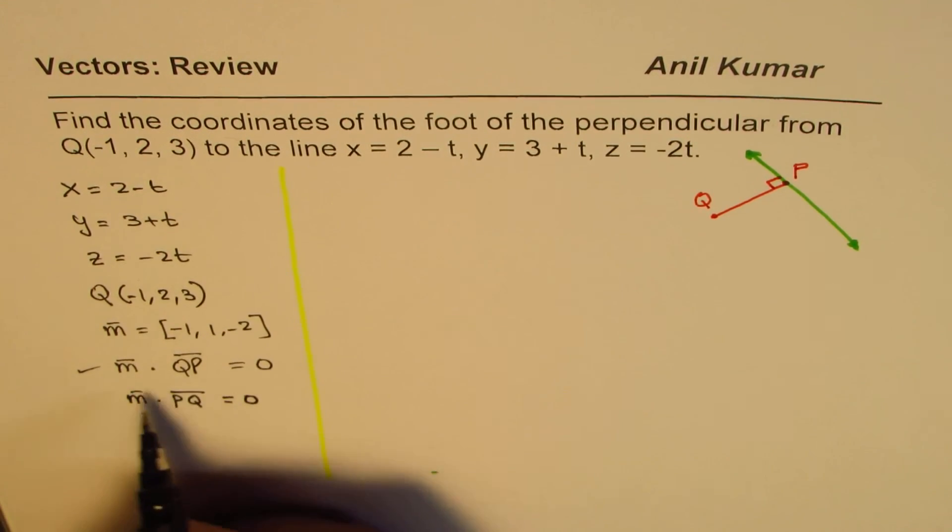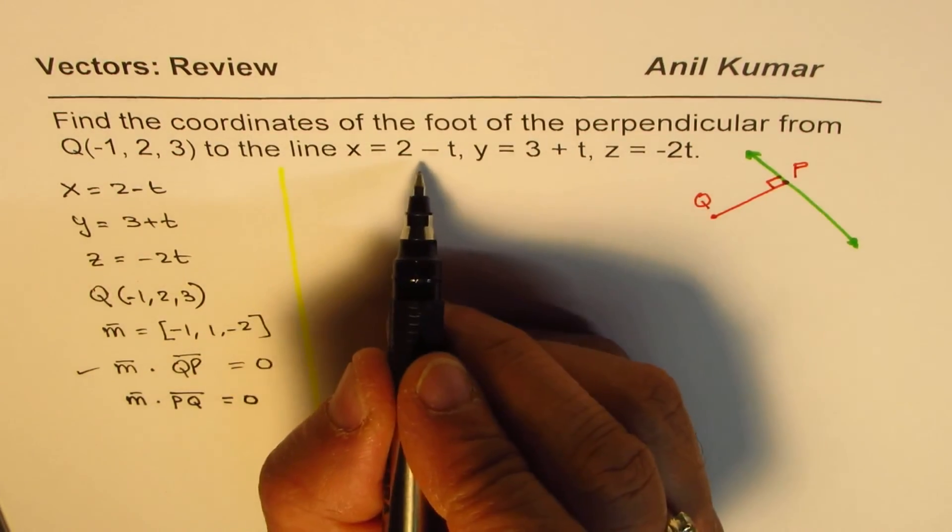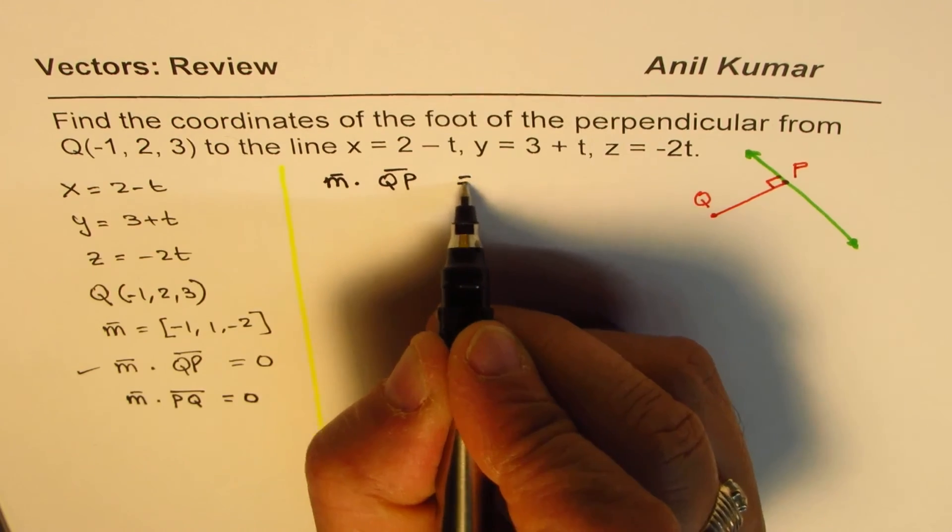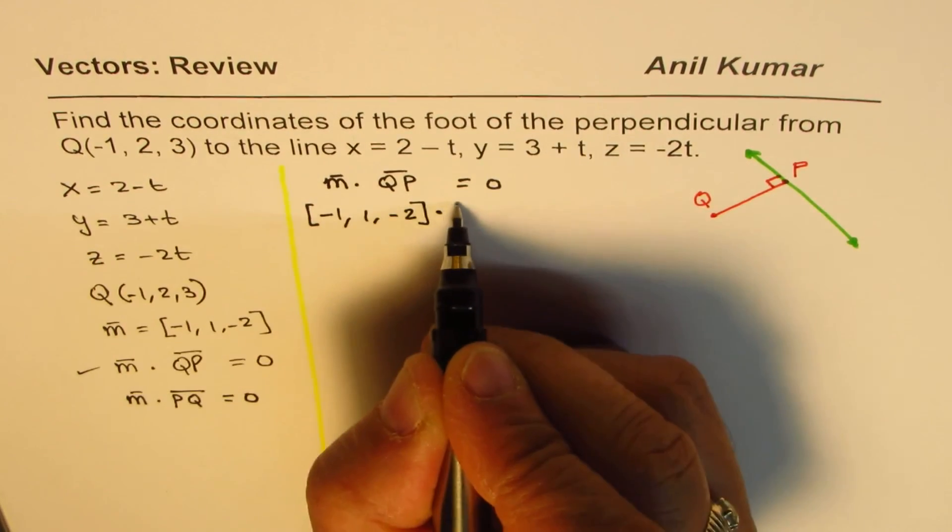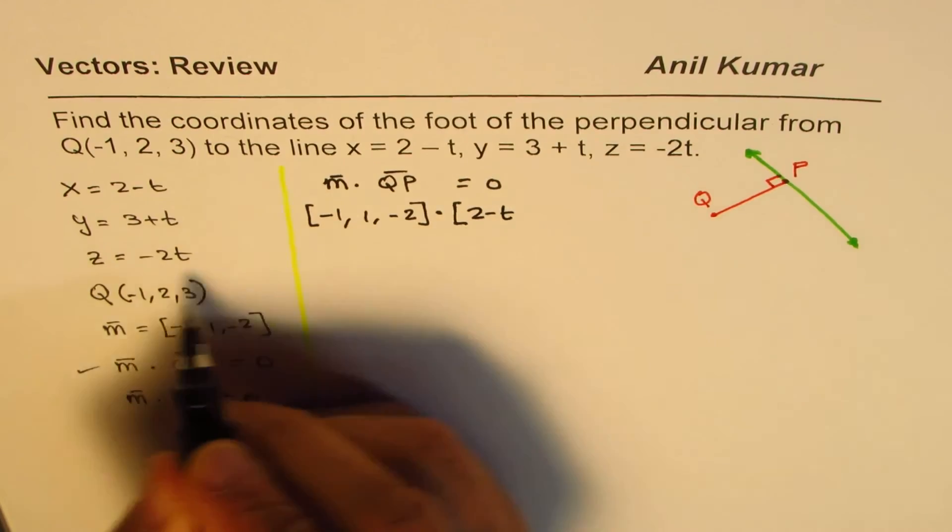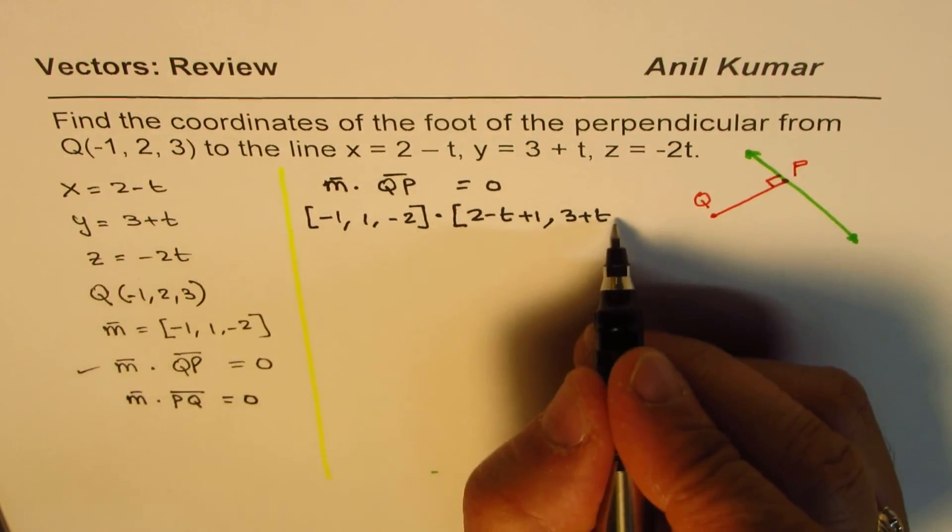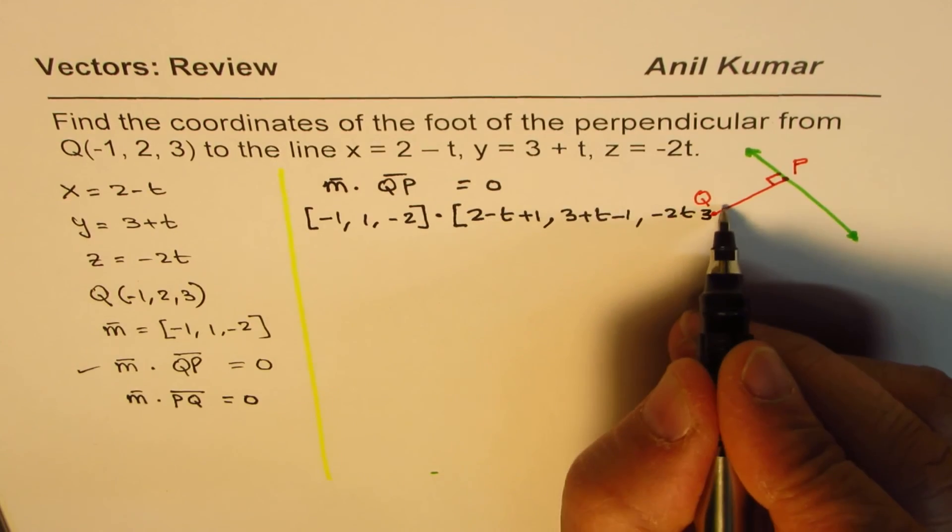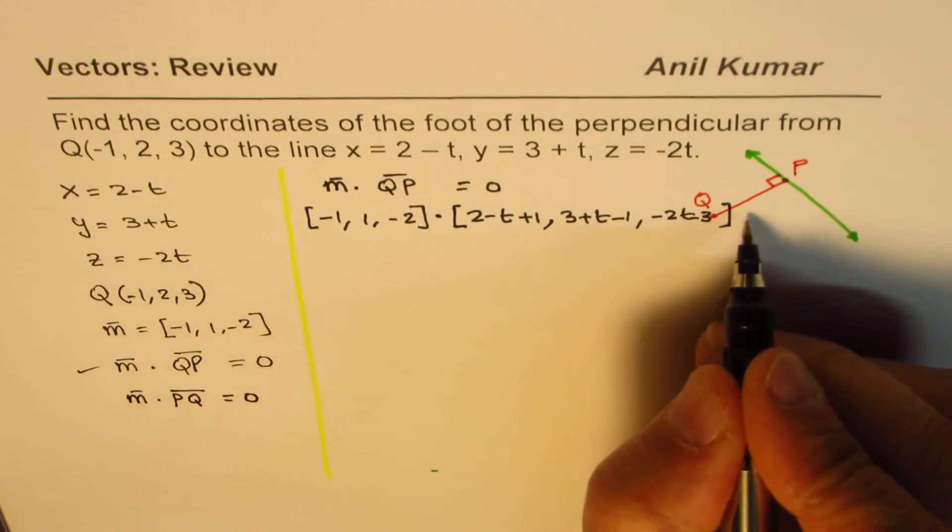Let's write down this dot product. m for us is written here, we can read from here also, minus 1. So we have m dot QP, which we are going to use. That should be equal to 0. So m is (-1, 1, -2), dot QP, from Q to P, that means P coordinate minus the Q coordinate. So we have 2 - t minus -1 which is plus 1, 3 + t minus 2. And then we have -2t, and z coordinate is 3 for us. z is minus 3. So that's what we get.